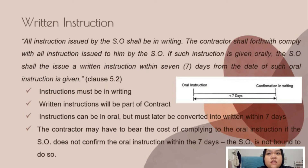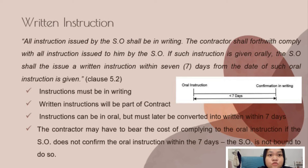Clause 5.2 - Return Instruction. This clause explains that the instruction must be in writing. Return instructions will be part of the contract. Instructions can be oral, but must later be converted into a written return within 7 days. The contractor may have to bear the cost of complying with an oral instruction if the SO does not confirm it in writing within 7 days, as the SO is not bound to do so.